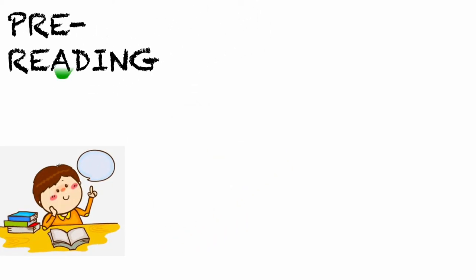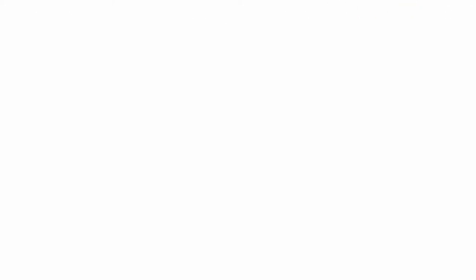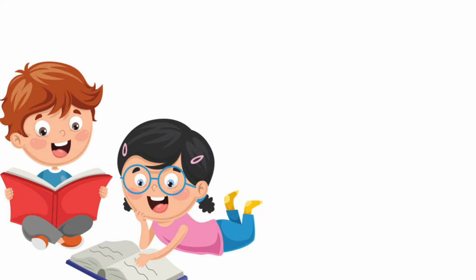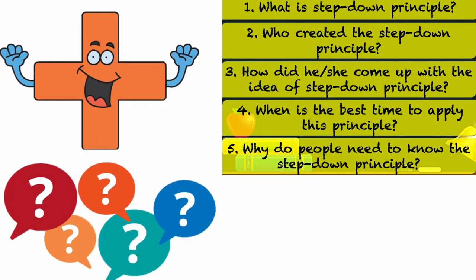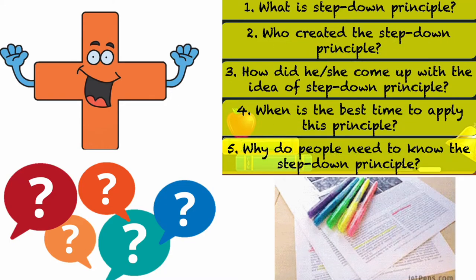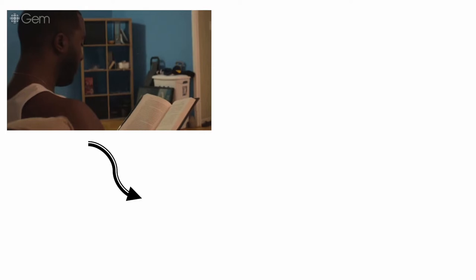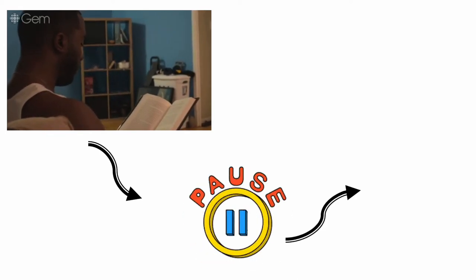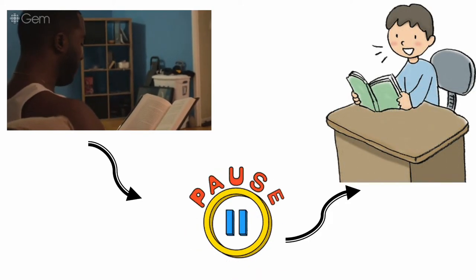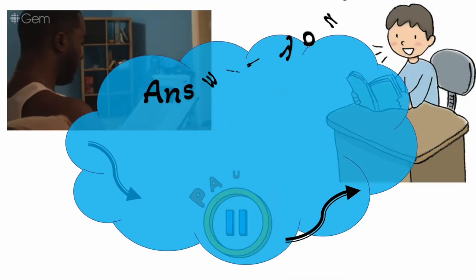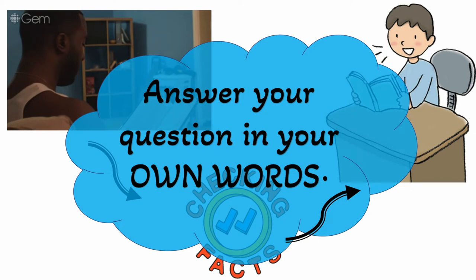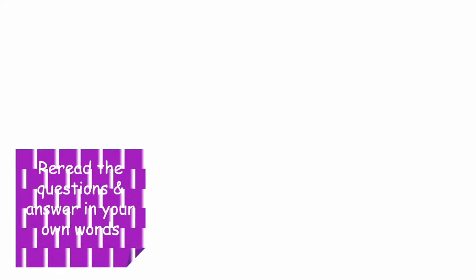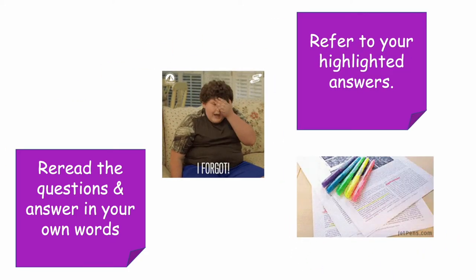Now that you're done with the pre-reading stage, here comes the actual reading. As you read, try to look for the answers to your guide questions. Feel free to add more questions if you find important information. Highlight the answers. After reading each section, pause and read the question and answer aloud — reading them aloud will help you focus your understanding. Then answer your questions in your own words. In case you forgot information, you may refer to your highlighted answers from each section.